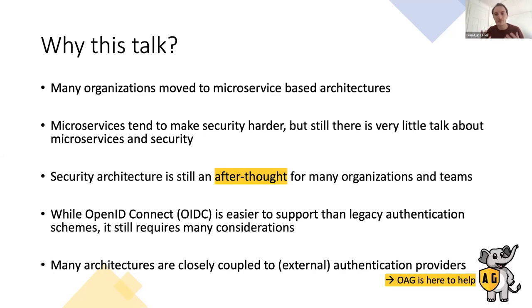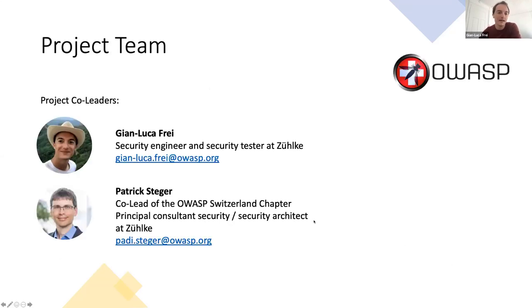The OWASP Application Gateway project was initiated due to those challenges. A short view on the team: we have a few open source contributors, and the project is co-led by Patrick Stegel, a principal security architect at Zilker Engineering, and myself — a security engineer and security tester also at Zilker. By the way, we're also hiring, so feel free to write me a note.